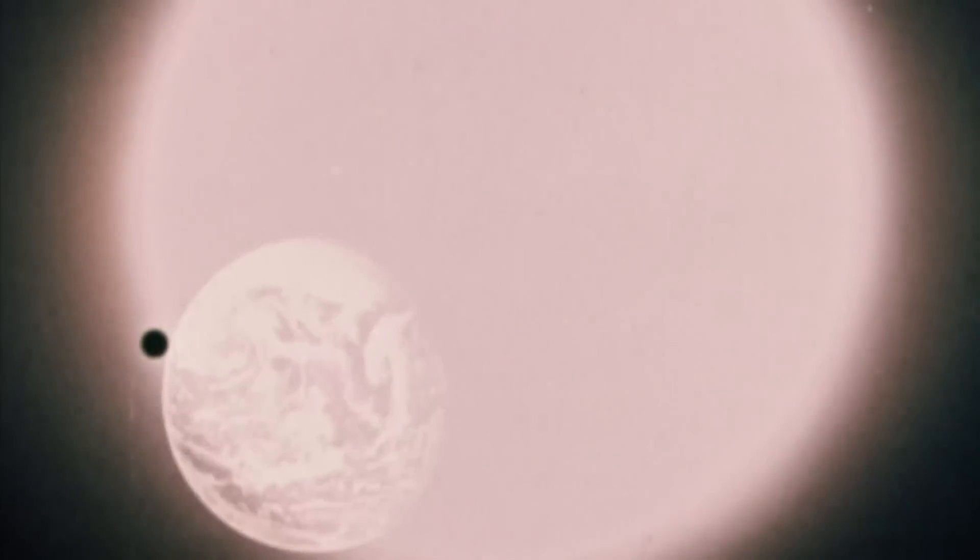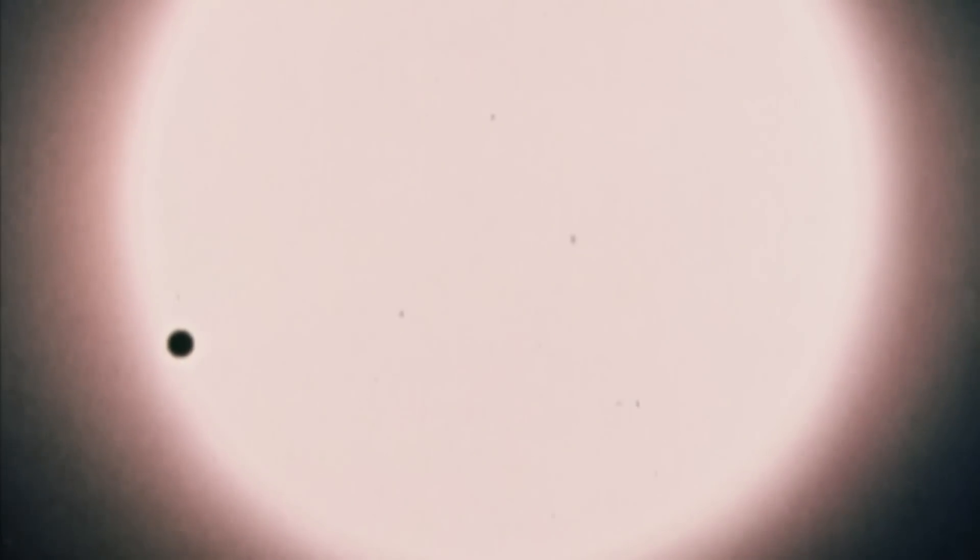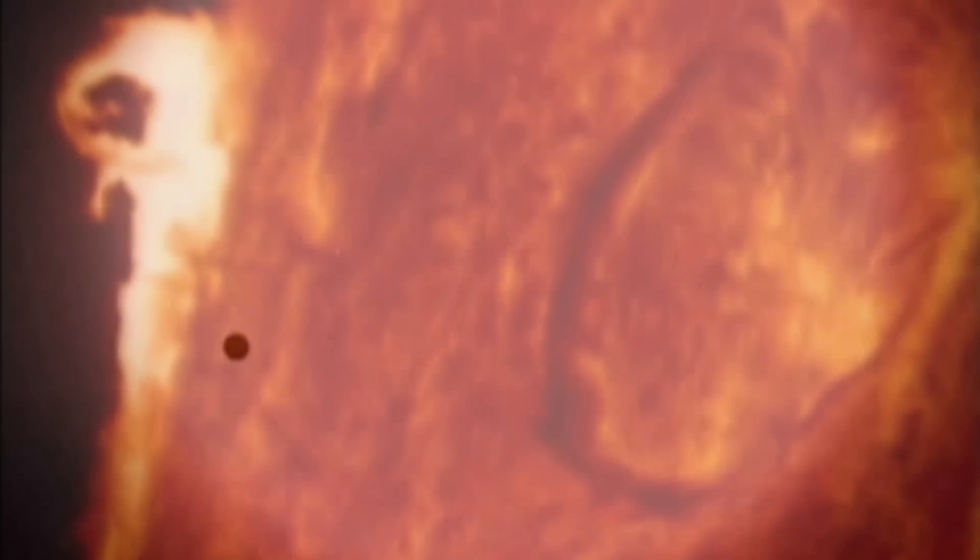Mercury, the closest planet to the Sun, remains somewhat of a mystery to us. It's a missing piece in our understanding of the evolution of our solar system, but a piece that presently doesn't seem to fit the jigsaw.